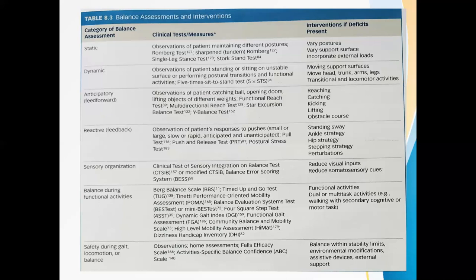Then comes the single leg stance test, where the patient is allowed to stand on one leg without shoes, with arms crossed or hands on hips, without letting the legs touch each other. Then comes the stork stand test, performed by having the patient stand on both feet with hands on hips, then lift one leg and place the toes of that foot against the knee of the other leg. On command, the patient raises the heel to stand on the toes and tries to balance for as long as possible without letting the heel touch the ground or the other foot move away from the knee. Normal adults should be able to balance for 20 to 30 seconds on each leg.